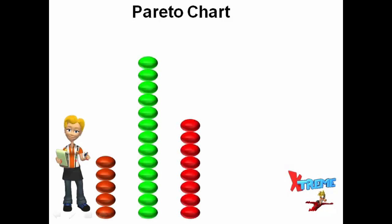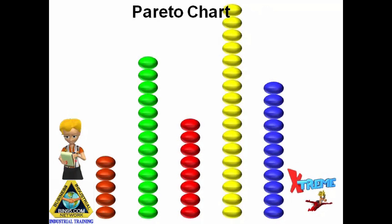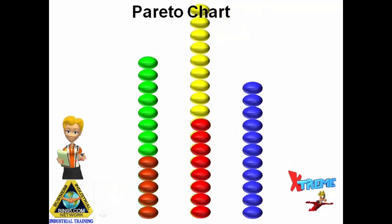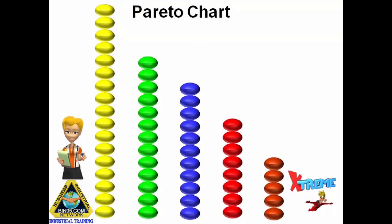Then, using your total count of each group, you can get an idea of how each problem stacks up against each other. Then put the largest groups to the left, descending to the right. You now have a basic Pareto Chart.